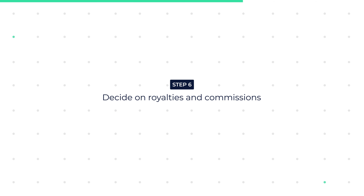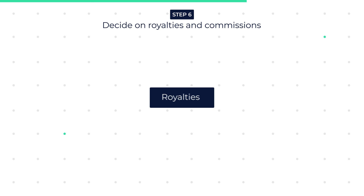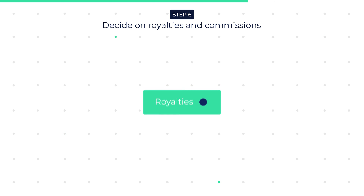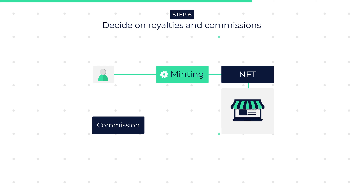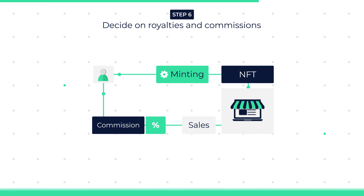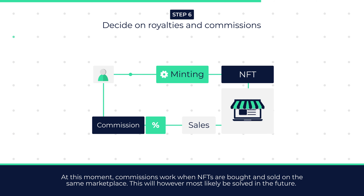Step 6: Decide on royalties and commissions. An important step to consider is whether to enable royalties or not. After minting a new NFT, most marketplaces offer the option to enable commissions at a percentage you desire, meaning you are paid a commission on all future sales of that specific NFT. Currently, commissions work when NFTs are bought and sold on the same marketplace, but not when exchanged on a different marketplace than where it was originally minted — though this will most likely be resolved in the future.